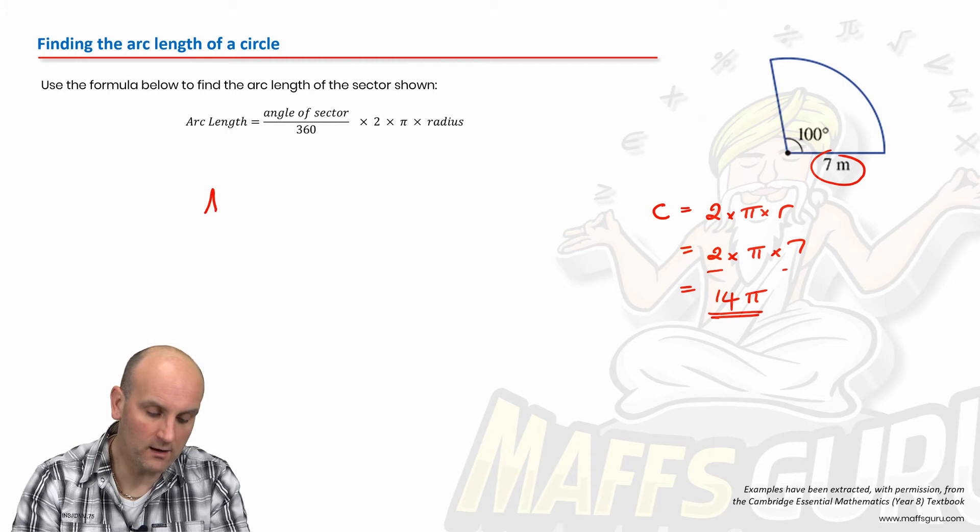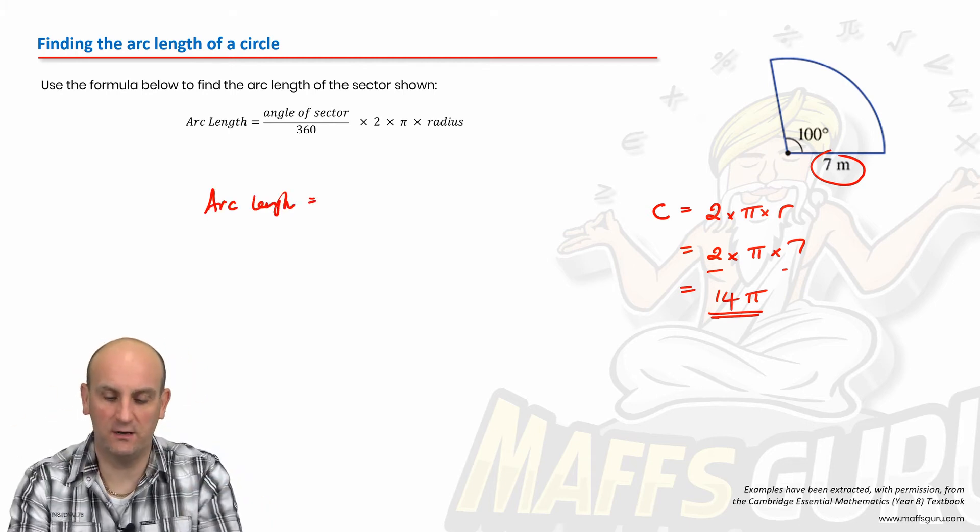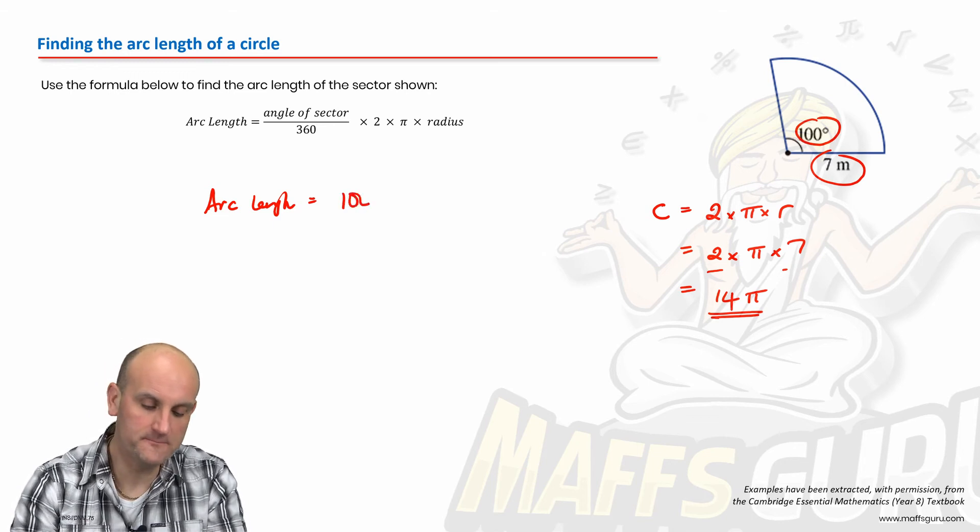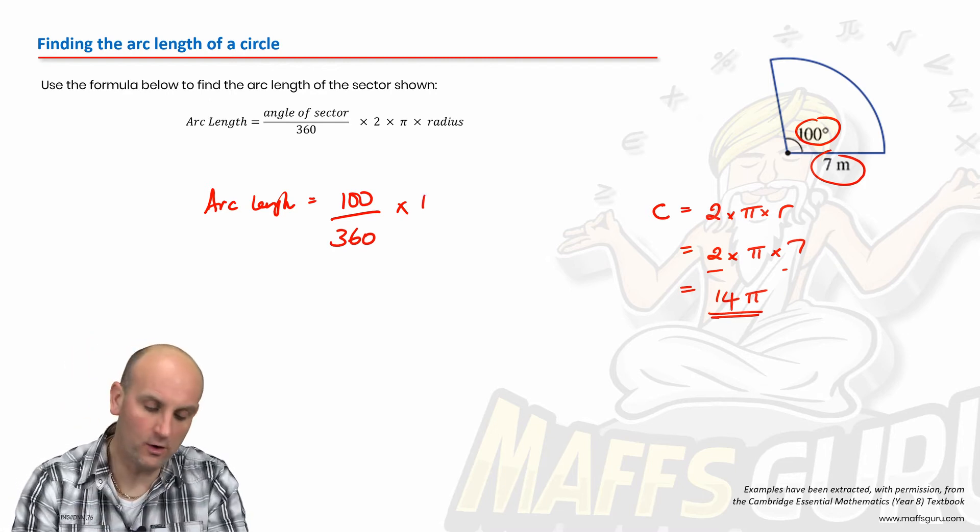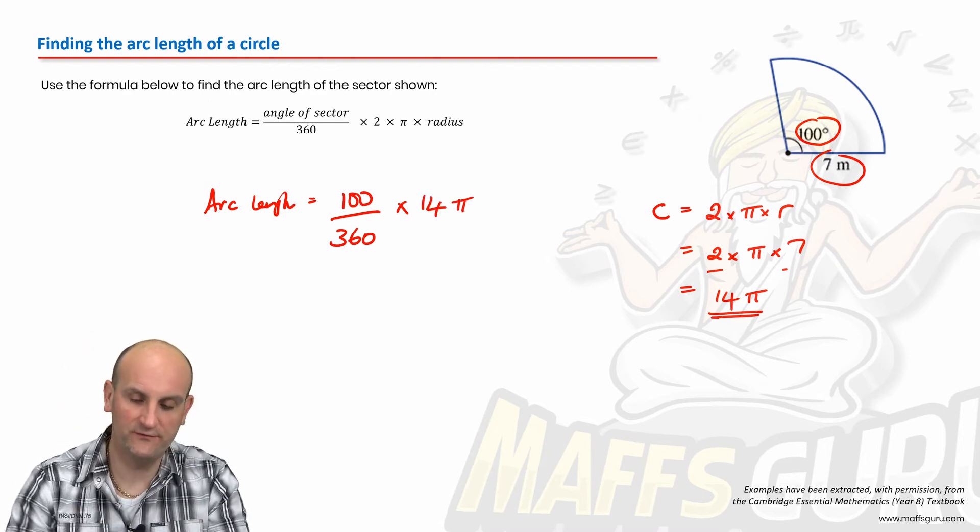So I now know that my arc length is the fraction of the circle I've got. I've got a hundred degrees out of 360 degrees. I've got that fraction of my whole circle, which is 14 pi.